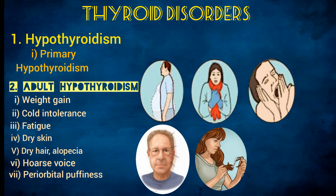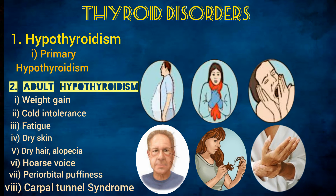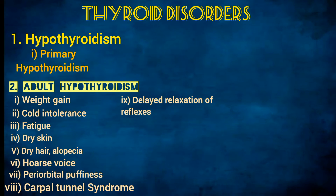As mentioned, there is deposition of mucopolysaccharides, so when deposited around the eyes they pull fluid resulting in periorbital puffiness. Another feature caused by this is carpal tunnel syndrome: if the edema or fluid retention occurs around the nerves of the hand, it can compress the median nerve, and the patient will complain of pain and numbness in the hand or arm.